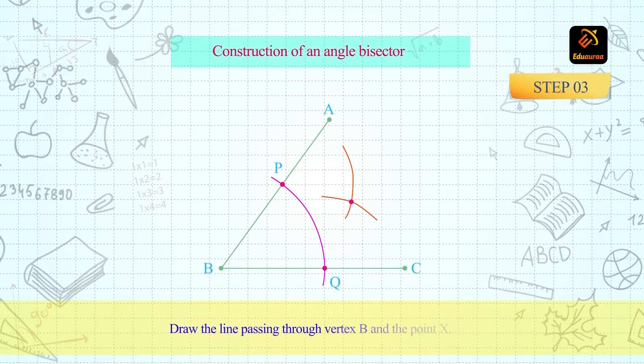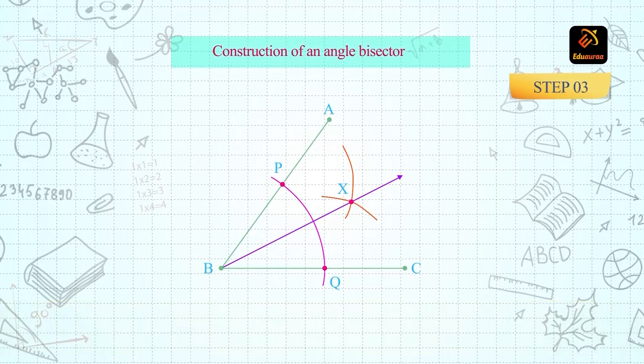Draw the line passing through the vertex B and the point X. This ray BX is the required bisector of the angle ABC.